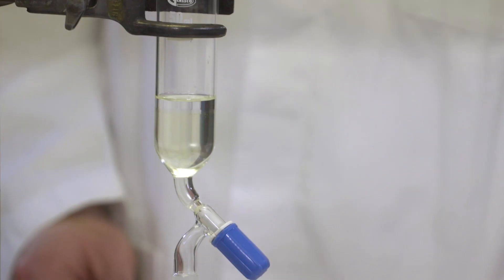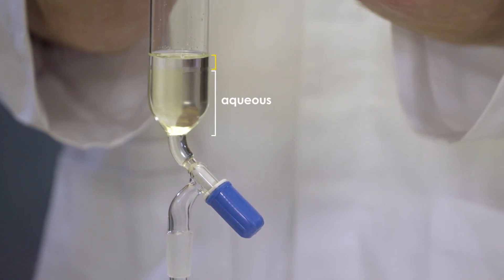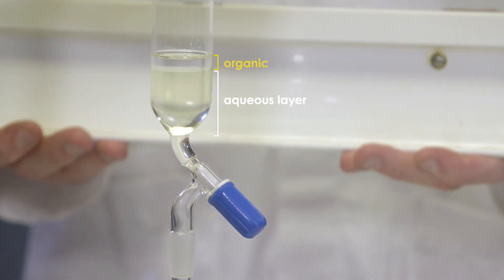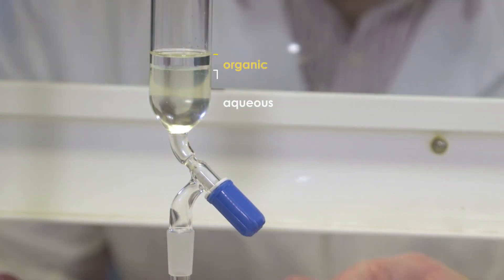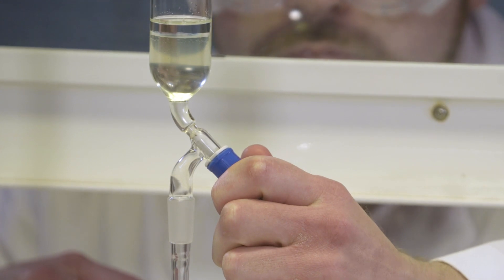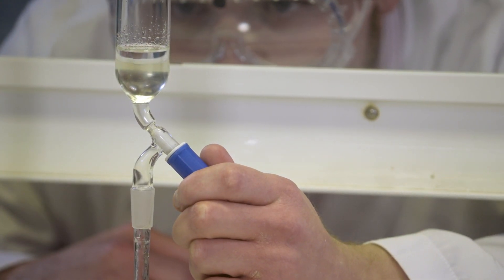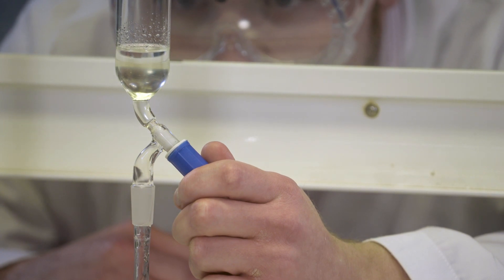Now, you can clearly see we have this cloudy layer at the bottom and this clear layer above. The cloudy layer is the aqueous layer and it's more dense than the organic layer in this reaction. To remove the aqueous layer, we can open the tap and allow it to drain. Another tip, make sure the lid is removed from your separating funnel or the solvent will not run freely.